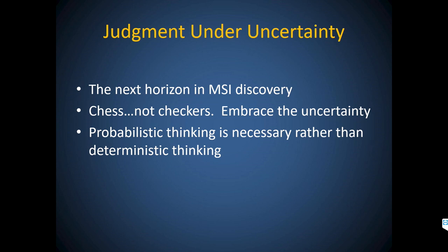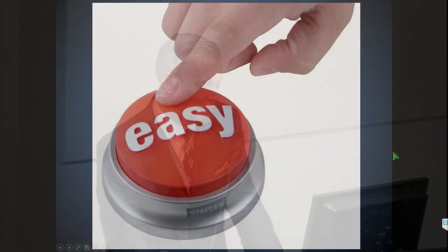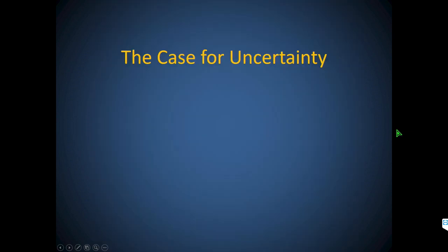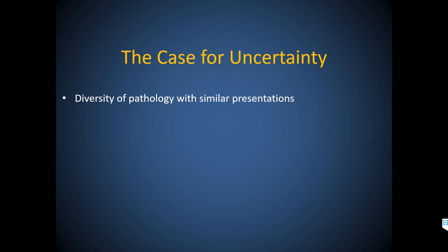Probabilistic thinking is necessary. Deterministic thinking — like using the Kocher criteria and applying it to almost every child with an isolated hip effusion that looks like it might be septic arthritis — those criteria are intended to give helpful guidance but are often used as a decision-maker, and we shouldn't use them that way. This is the highest-hanging fruit. I think we've exposed all the low-hanging fruit in our processes, and embracing the uncertainty will make a real difference.